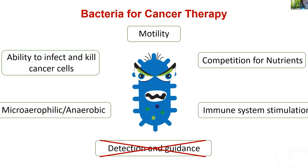Bacteria in general have a long history in cancer therapy. Already in the 1890s, Coley discovered that some cancer patients recovered after suffering bacterial infections that destroyed the tumor. Over the last century, many general bacteria have been investigated to treat cancer because they have advantages: for example, they can infect and kill specifically cancer cells by competing for nutrients, and some secrete exotoxins that activate the immune system to fight tumors.